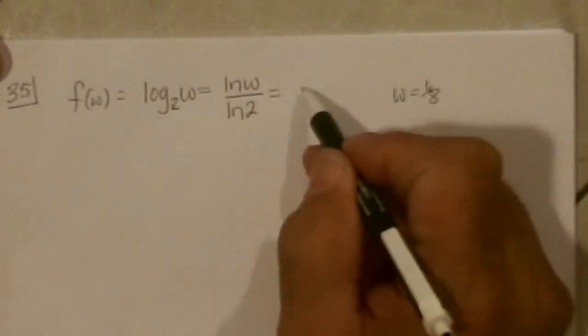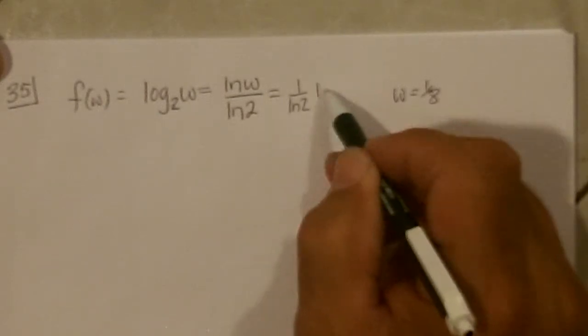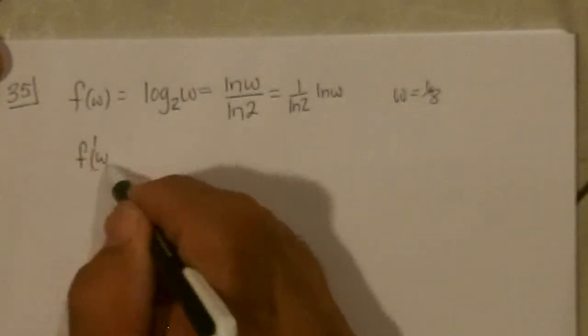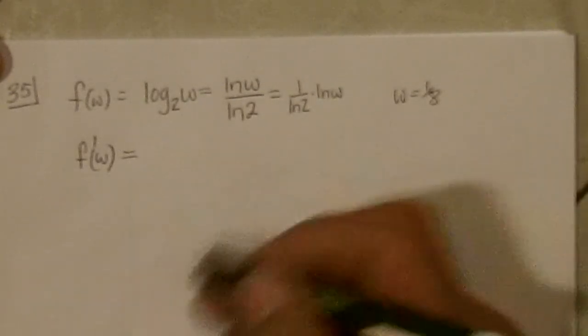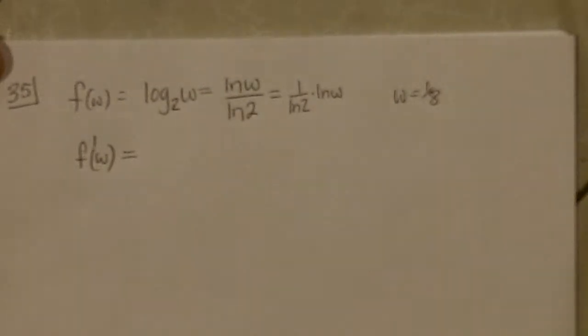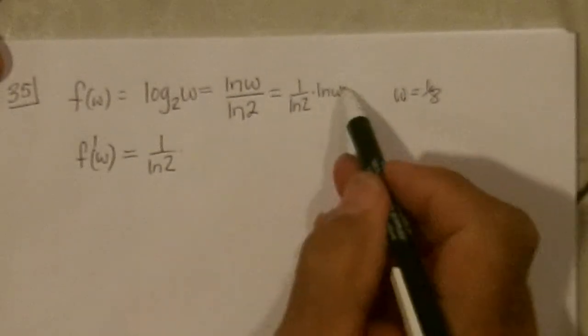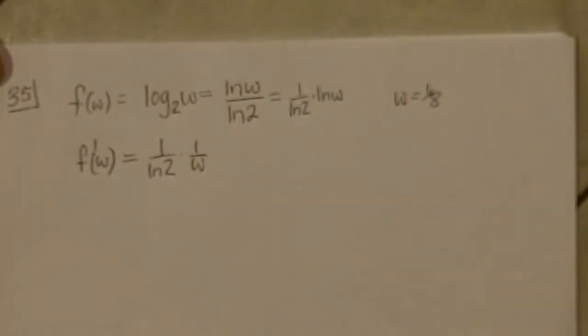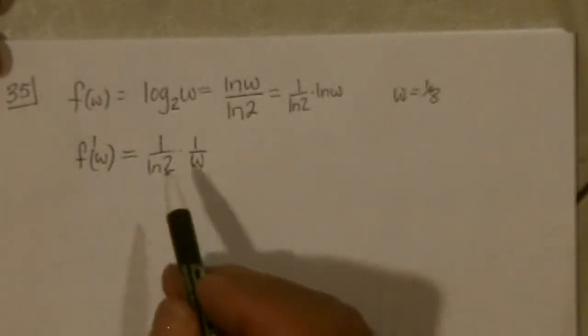Rewritten so you can understand that's just 1 over ln 2, a number, times ln W. So F prime of W would be the constant just follows along because it's times. So we've got 1 over ln 2 times the derivative of ln W, which is 1 over W. And W is a variable, so we don't have to go dW dX, or T, or anything like that. So there's the derivative.